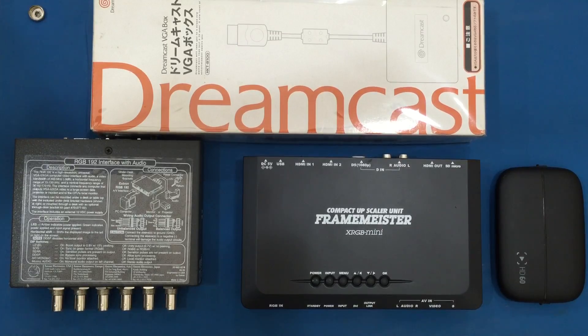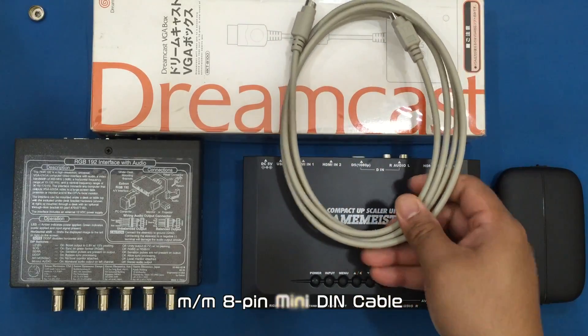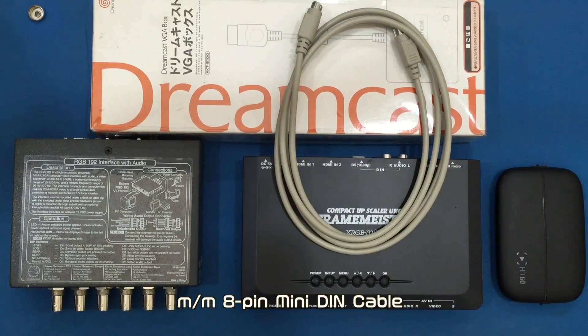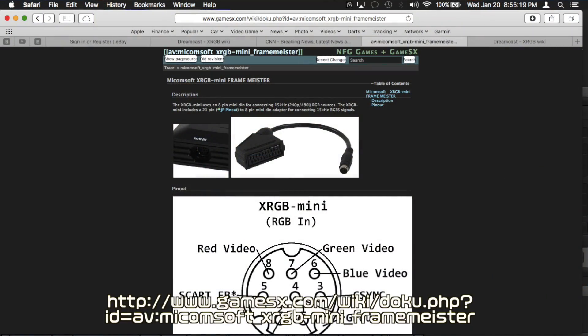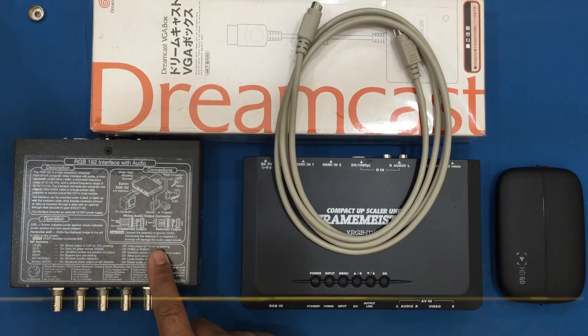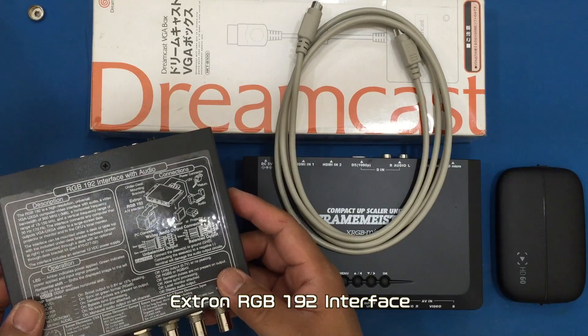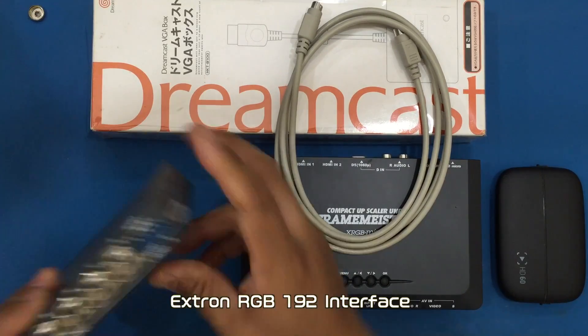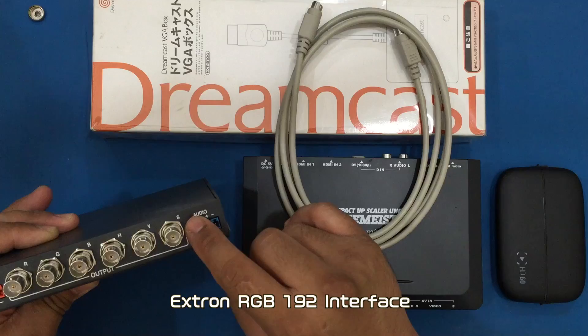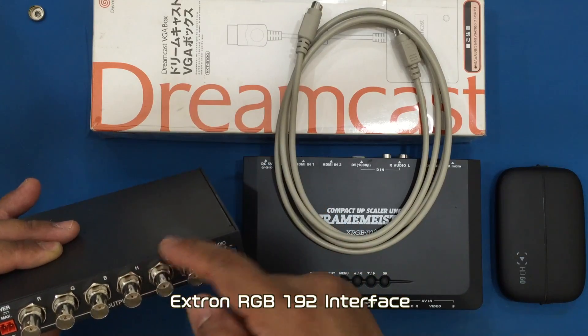The materials needed are an 8-pin male-to-male DIN cable which the Framemeister uses for its RGB jack and you can find the pinouts over at VMSX. Obviously an RGB interface. In this case this is the Xtron RGB-192 interface and you can see this one has the RGB-S sync signal along with the HDV signals.